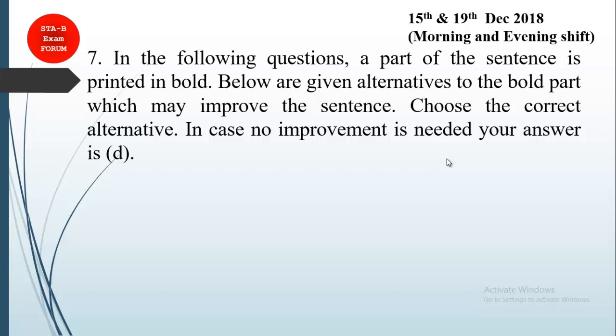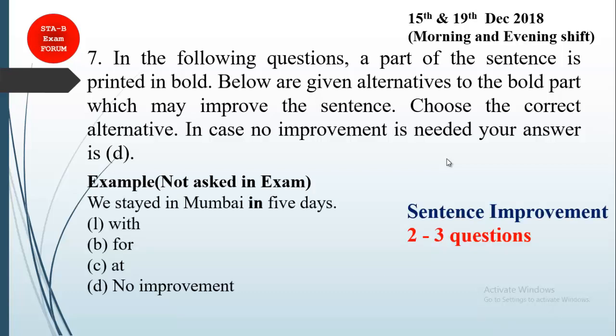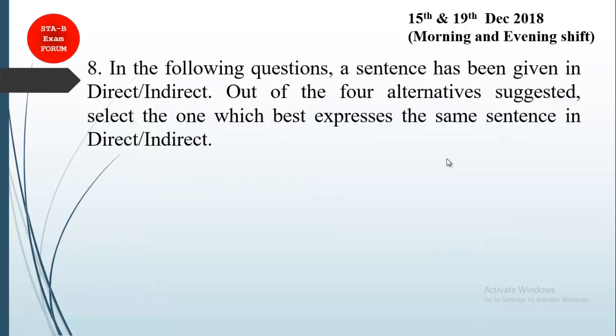In the following questions, a part of the sentence is printed in bold. Below are alternatives to the bold part which may improve the sentence. If no improvement is needed, option D is your answer. This is sentence improvement — two to three questions were asked. For example: 'We stayed in Mumbai in five days' — in place of 'in,' the correct word is 'for,' so 'We stayed in Mumbai for five days.' The correct answer is option B.